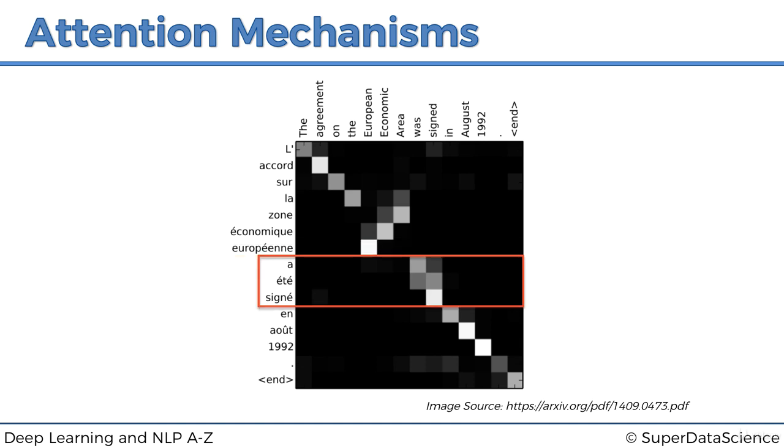Then, we have this part. This is also interesting, because here you have was signed, two words. In French, you actually have three words. A, été, signé, it's a passé composé, is the time.